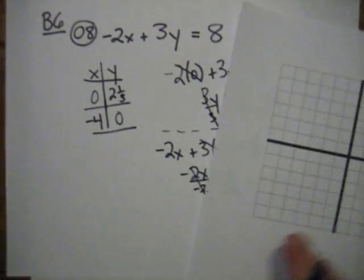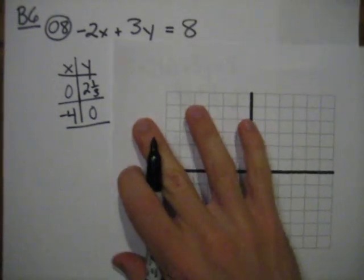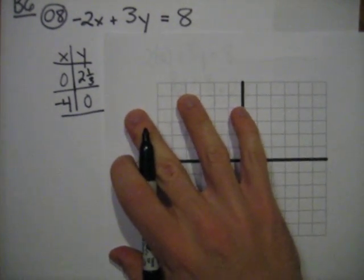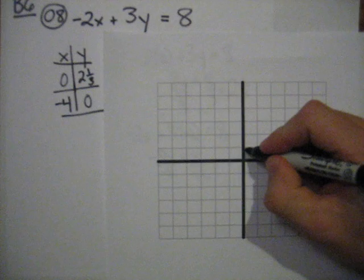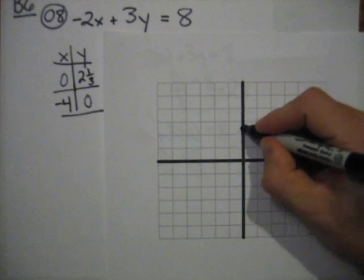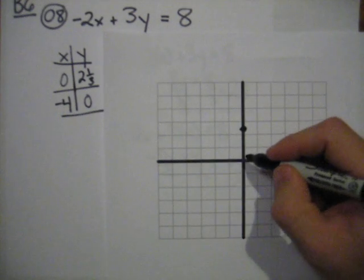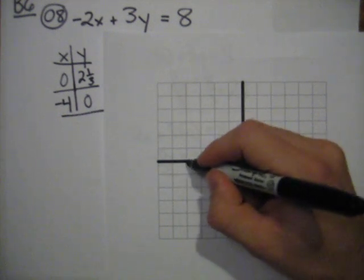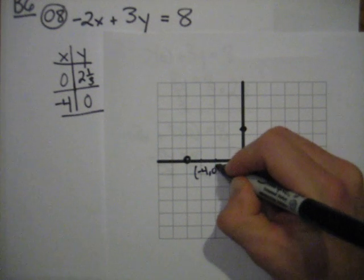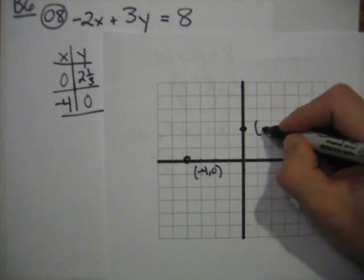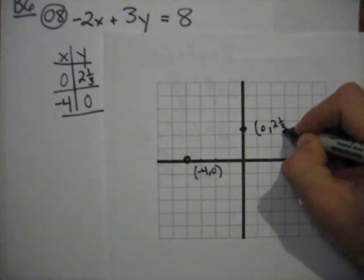Okay, so come over here and graph these two points. That is 0, 2 and 1 third. About right there, about a third of the way between 2 and 3. Negative 4, 0 is about right there. That's my negative 4, 0. That is 0, 2 and 1 third.